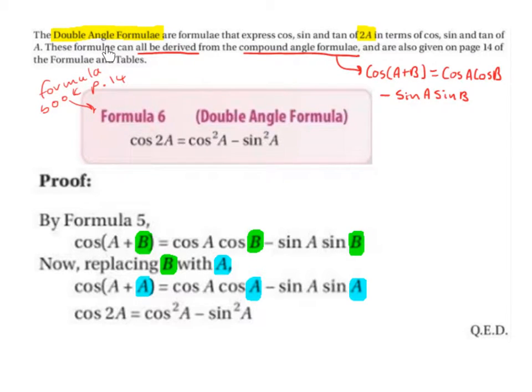These formulae can all be derived from the compound angle formulae. For example, one of them is cos(A + B) equals cos A cos B minus sin A sin B, and are also given on page 14 of the formulae and tables.